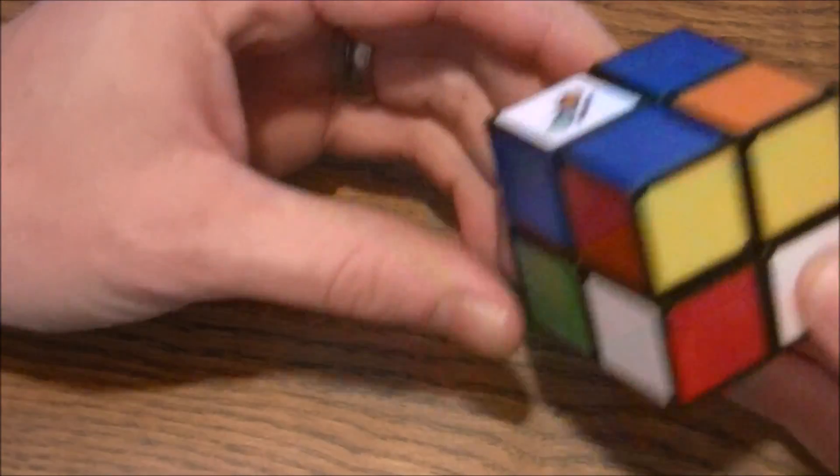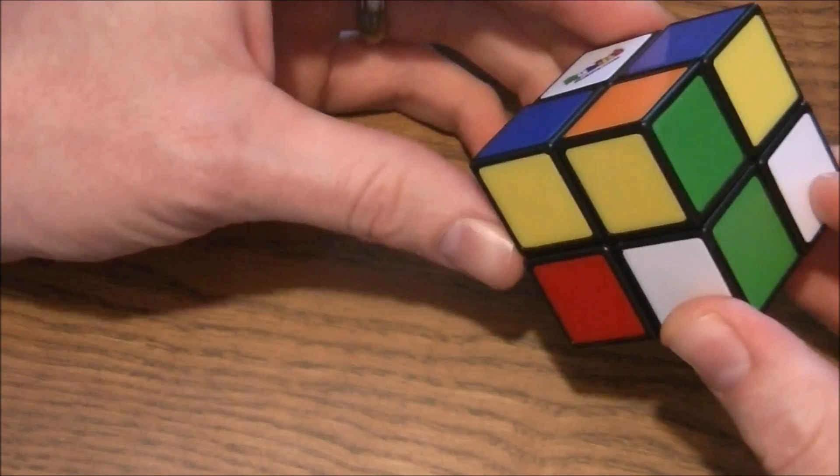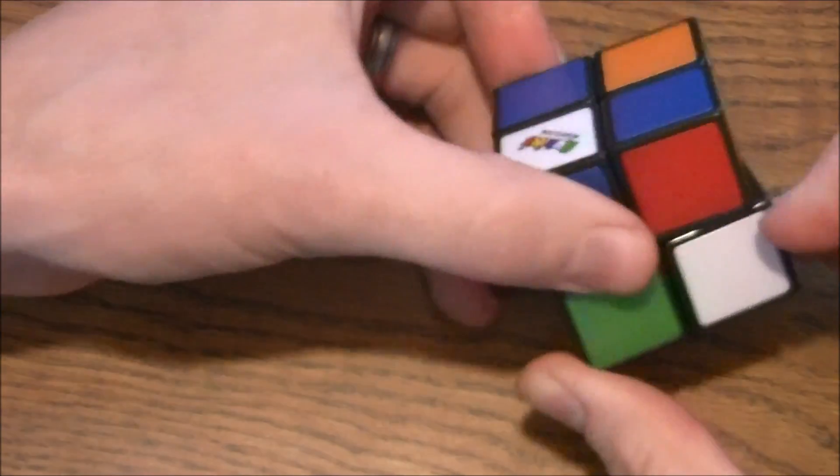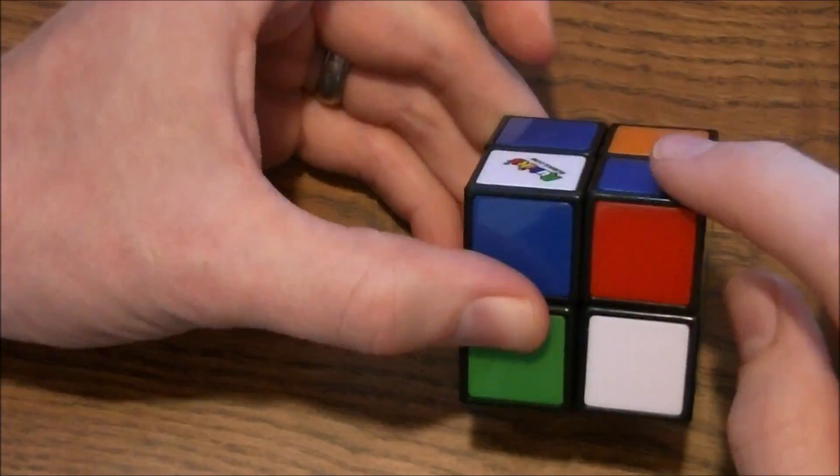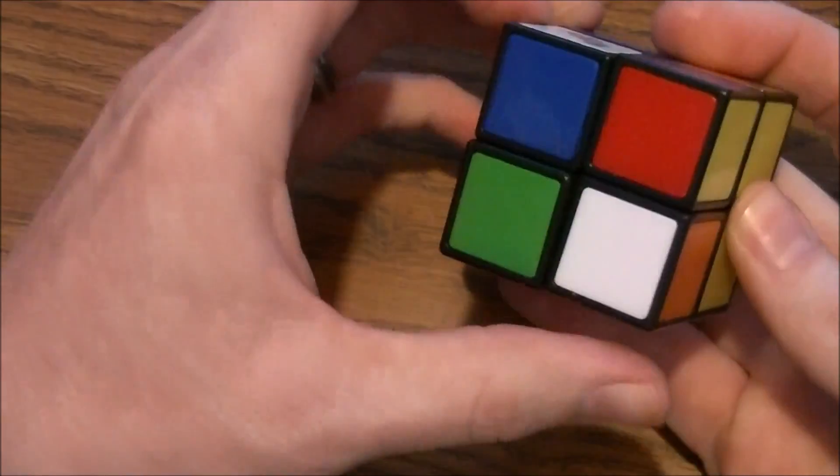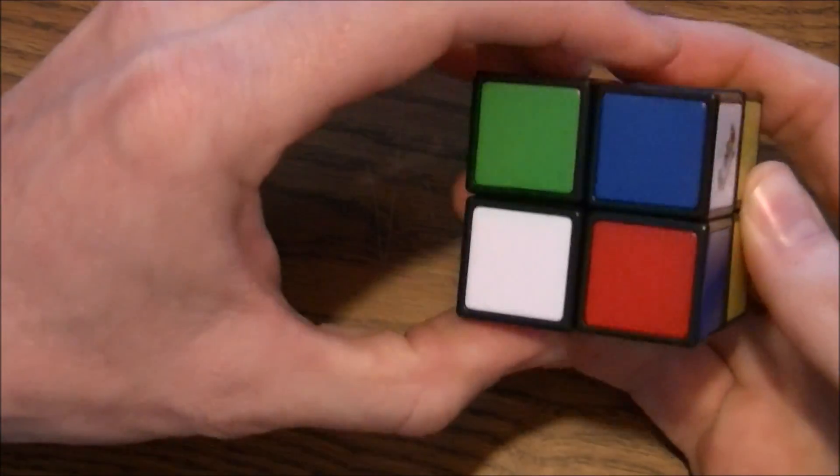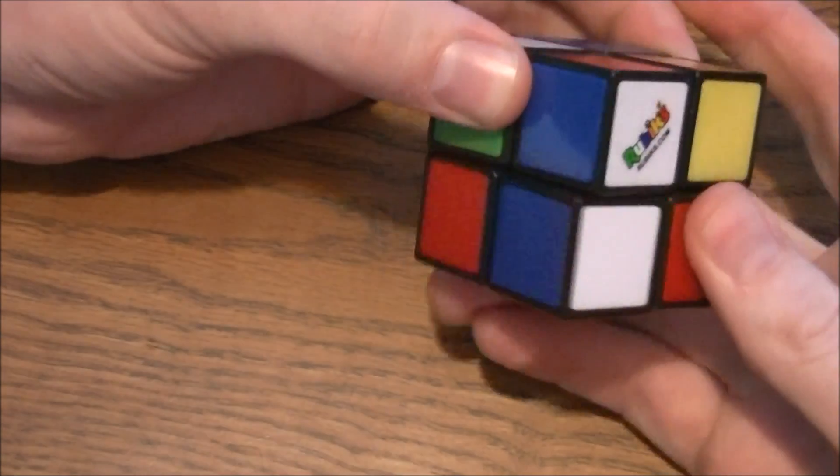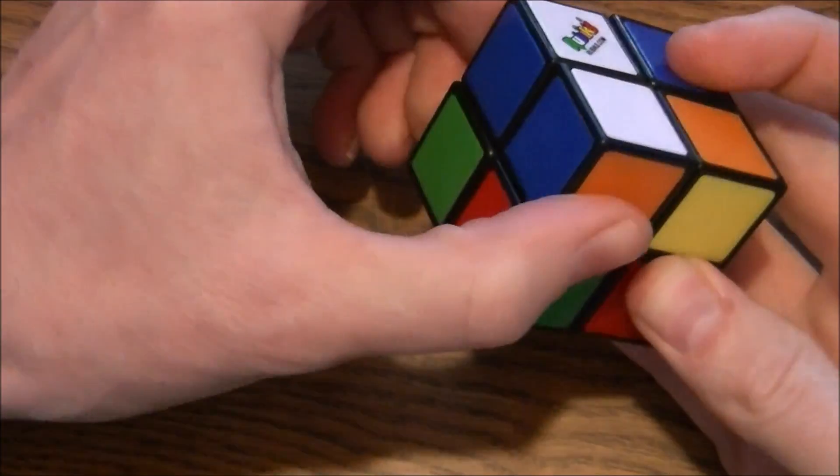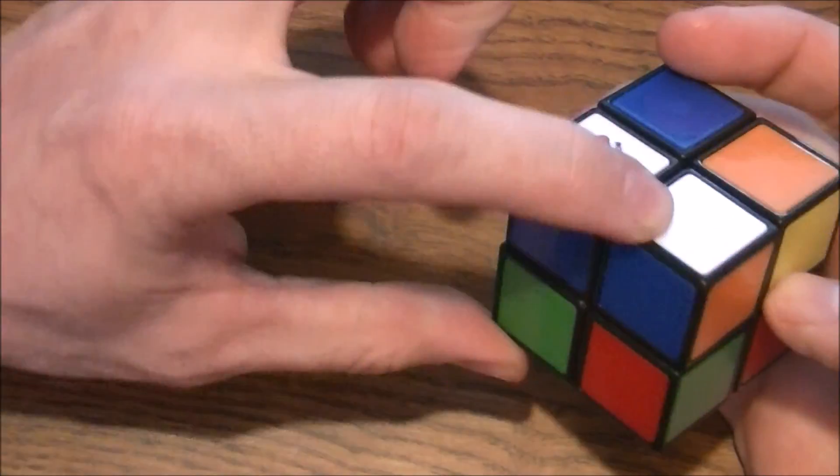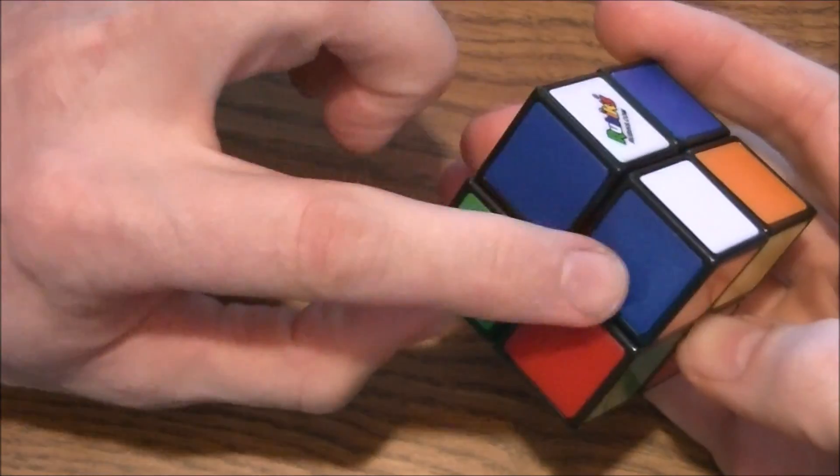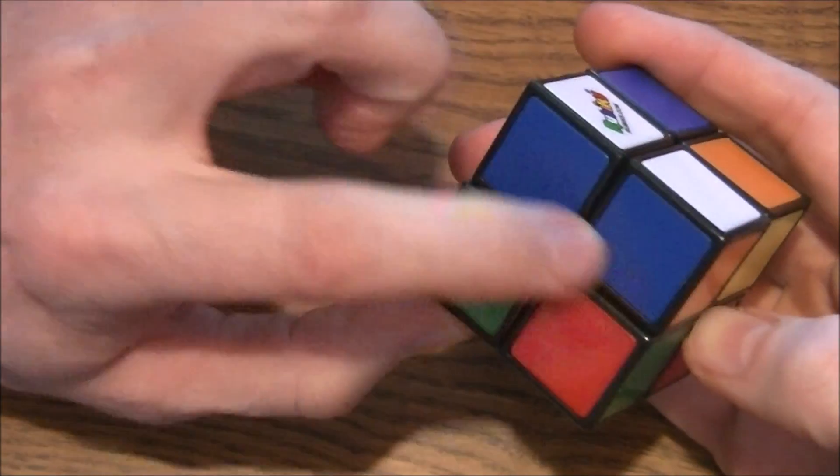So I want to get that piece up to here. To do that, I will bring it directly under where I want it to go. Then I turn the face, and I'm basically bringing it up now. And you can see, I've lined up the white pieces. I've lined up the sides with blue here.